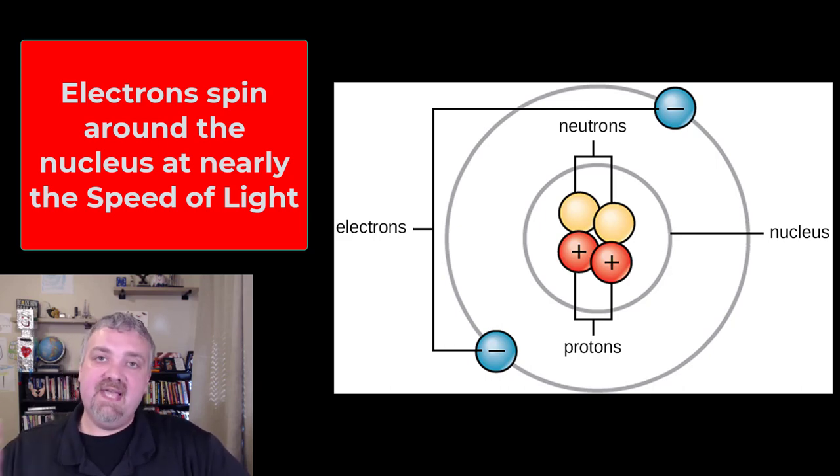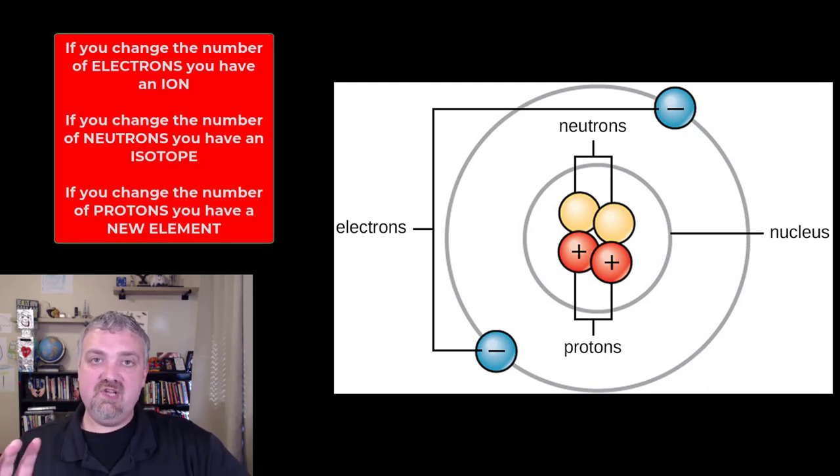The key thing I want you to know about atoms is what happens if you change any of these three ingredients. An electrically neutral atom will have the same number of protons, neutrons, and electrons. If you change the number of electrons, you will have given this atom a positive or negative charge. And now it's an ion. I'll cover that in a separate video.